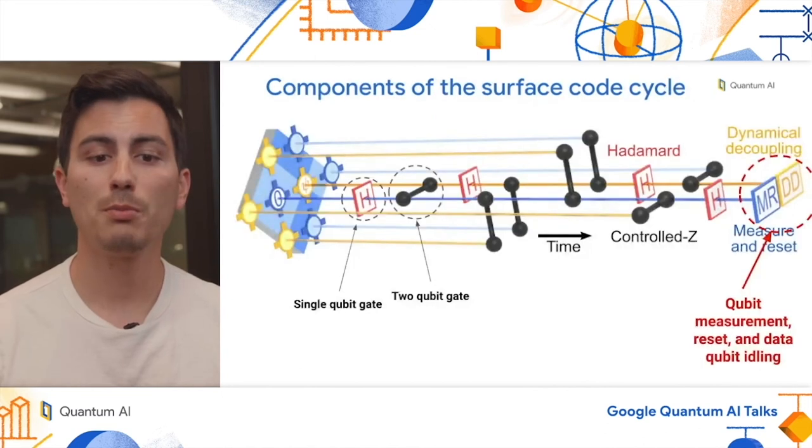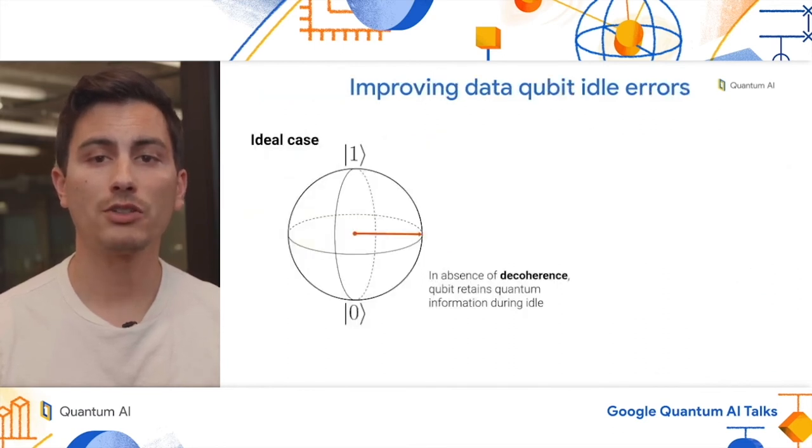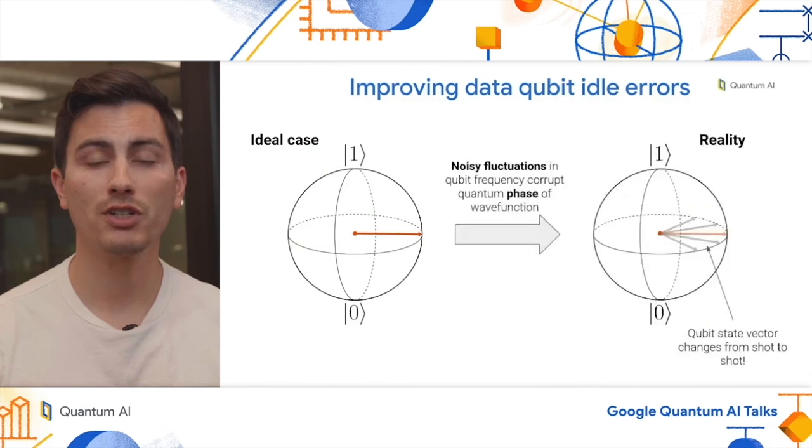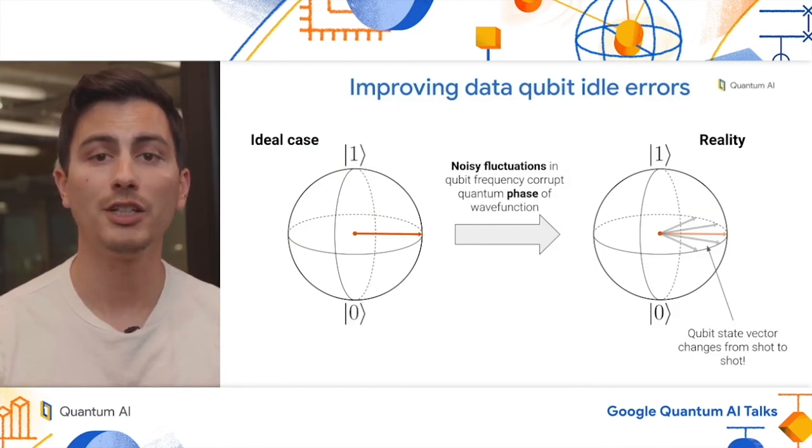Now that I've told you about single and two qubit gates, let's take a look at qubit measurement, reset, and data qubit idling. During this section of the error correction circuit, we read out and reset our measured qubits, and the data qubits sit idly. Now, in the absence of decoherence, the data qubits retain the quantum information perfectly. Unfortunately, in real life, we have decoherence. And in particular, noisy fluctuations in the qubit frequency corrupt the quantum phase of the wave function. And so from shot to shot, the Bloch vector can point in many different directions, and as we average over many shots, this manifests itself as additional error.